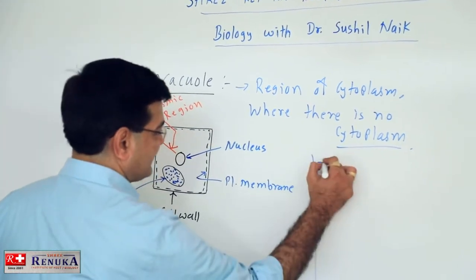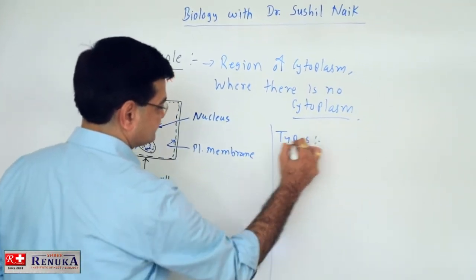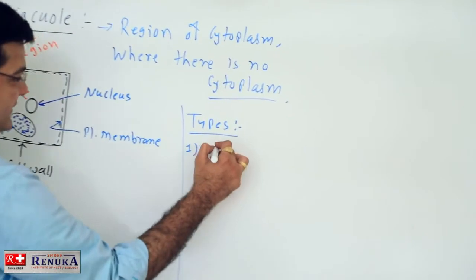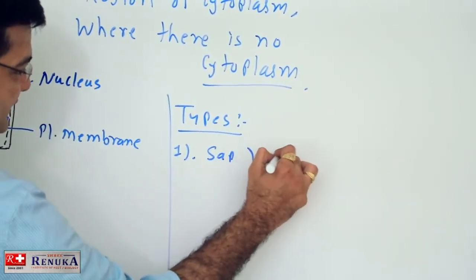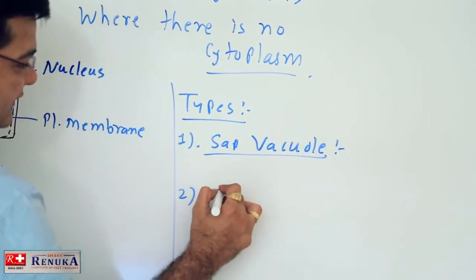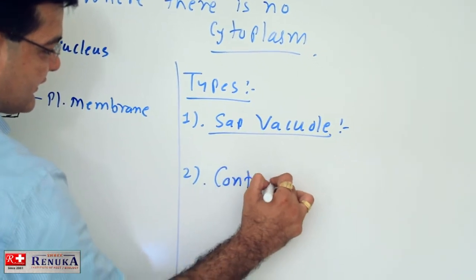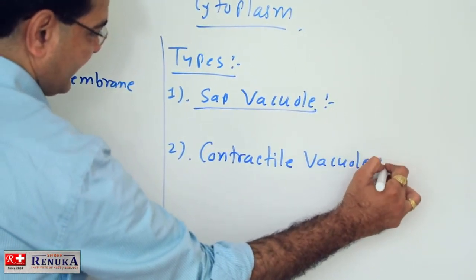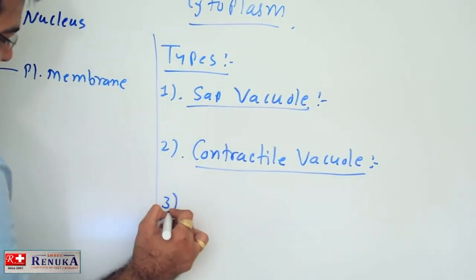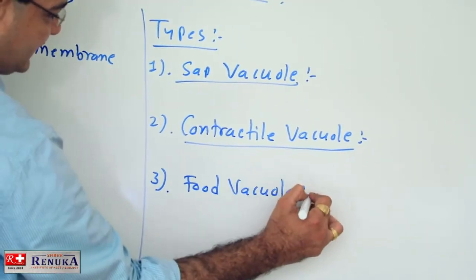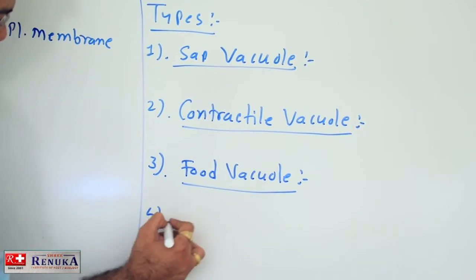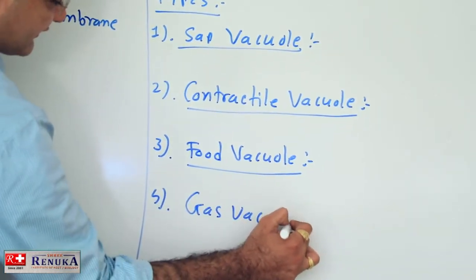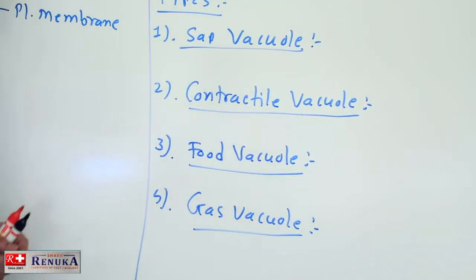Vacuoles are of different types. The first very basic is the sap vacuole. Second one is contractile vacuole. The third one, food vacuole, and the fourth one is the gas vacuole.